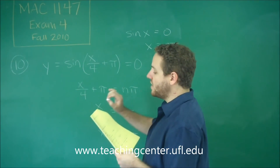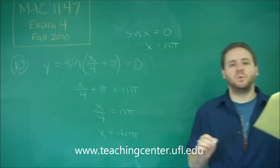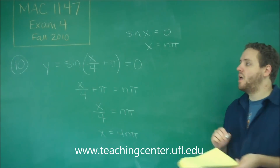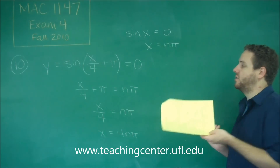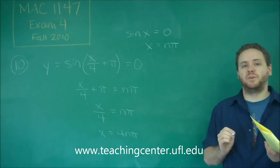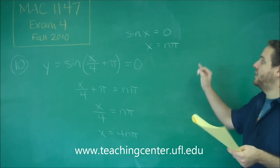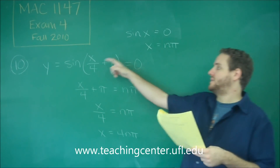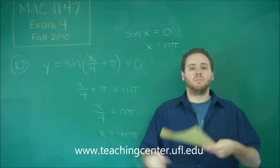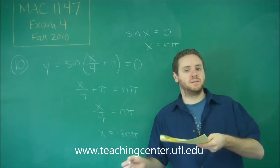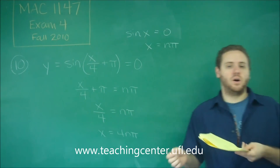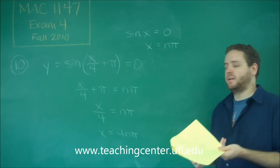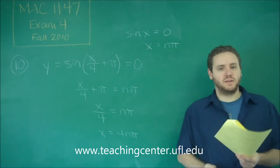This is a pretty common type of question. What you want to do is always take your trig function — whether it be sine, cosine, tangent, or whatever — find out where it's normally 0, and then set your more complex argument equal to that and solve for x.